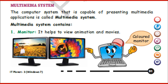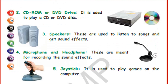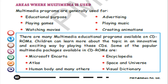A Multimedia system contains: a Monitor, which helps to view animations and movies; a CD-ROM or DVD Drive, which is used to play a CD or DVD disc; Speakers, which are used to listen to songs and get sound effects; a Microphone and Headphone, which are meant for recording sound effects; and a Joystick, which is used to play games on the computer.